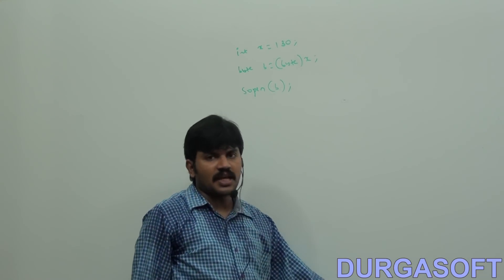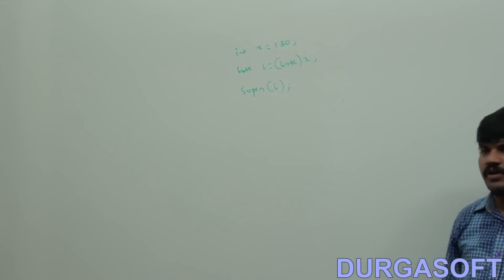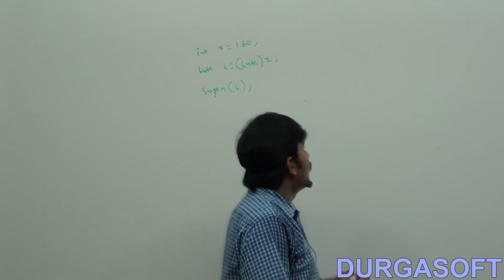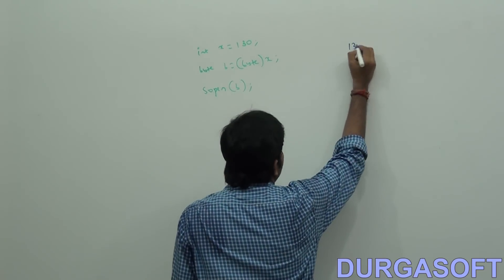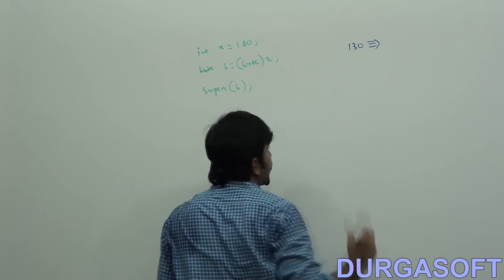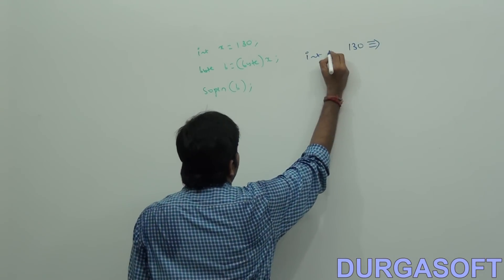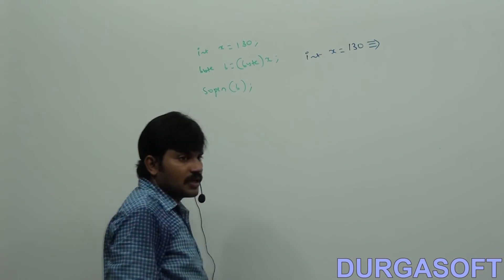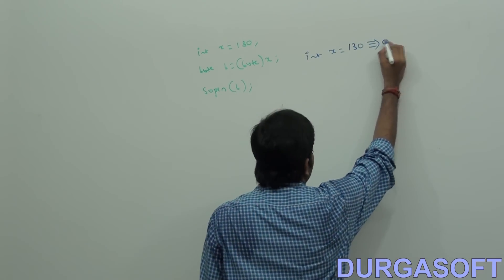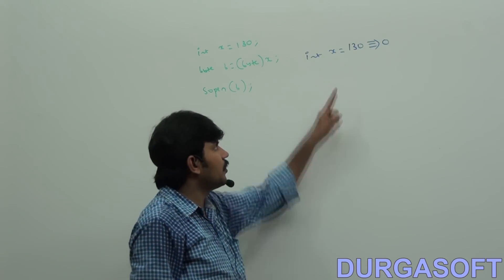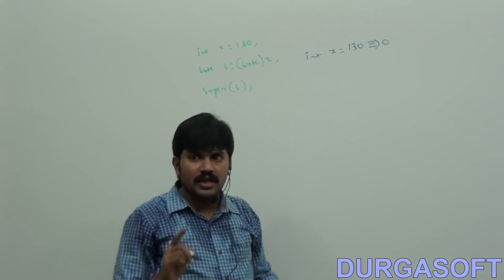In explicit typecasting, what is happening internally? Now observe this point well. 130 — how can we represent it internally? It is 4 bytes, a 32-bit value. Is it a positive number or negative number? Positive. That's why the most significant bit is 0. If it is positive, the remaining bits represent the value directly. That's why 130.